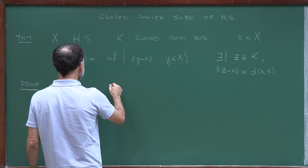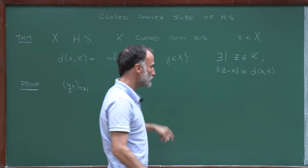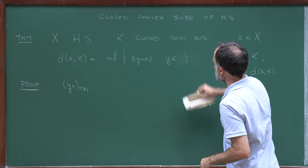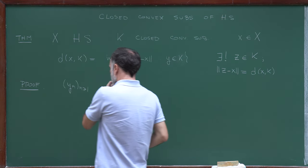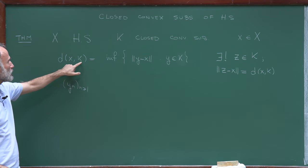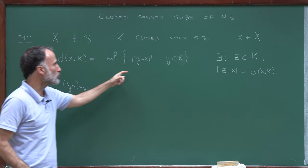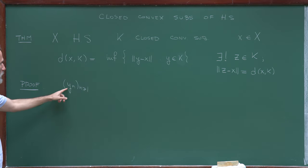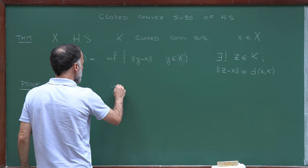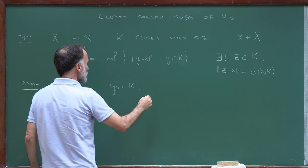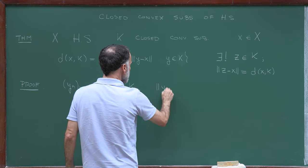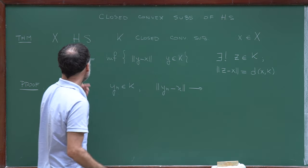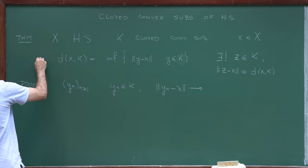I made a mistake here — it's not X, it's K of course. We are minimizing over K. I'm defining the distance between X and K as the infimum over all points in K of the norm of Y minus X.